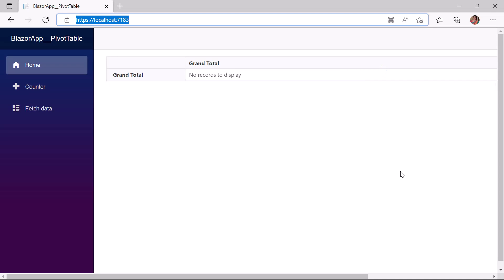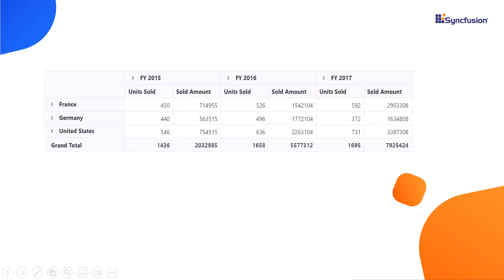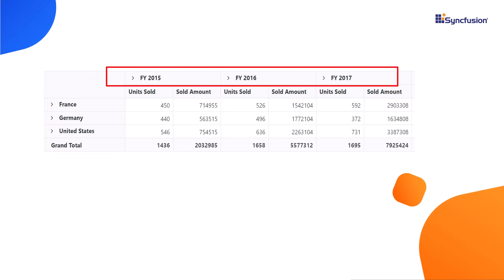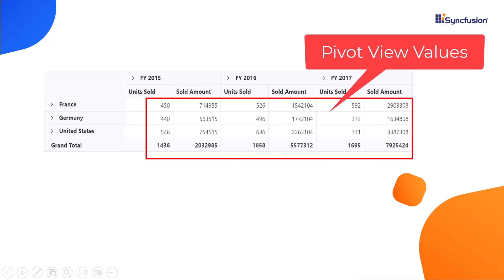The Blazor PivotTable is rendered with no data because rows, columns, and their aggregation values are not defined. To show the PivotTable with the defined data source, I need to add three major axes: PivotViewRows, PivotViewColumns, and PivotViewValues. PivotViewRows are a collection of fields displayed in the row axis. PivotViewColumns are fields for the column axis. PivotViewValues are fields with aggregated numeric values.